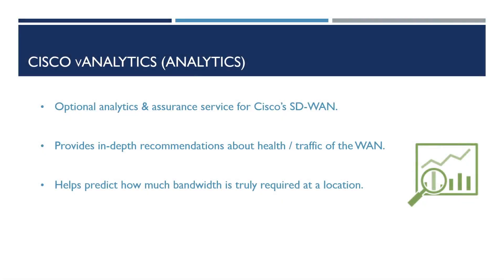The final component we'll take a look at is vAnalytics. This is an optional component to the SD-WAN solution that provides in-depth analysis and assurance services. It can provide in-depth recommendations based on the health and traffic passing through the network to automate the amount of time and effort required to manage your wide area network. It can also be utilised to predict how much bandwidth is actually required at our locations. For example, if we have 100 megabits of bandwidth at one of our locations but our average usage is only around 10 megabits per second, using the vAnalytics tool we now have the ability to downgrade this circuit and save some cost.